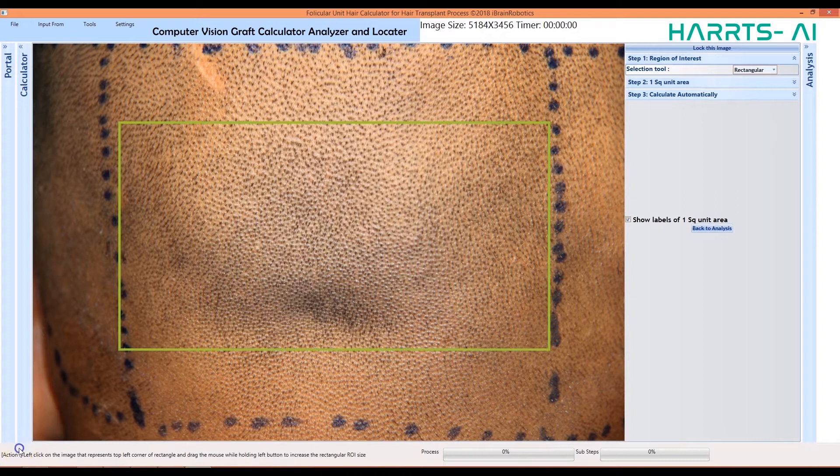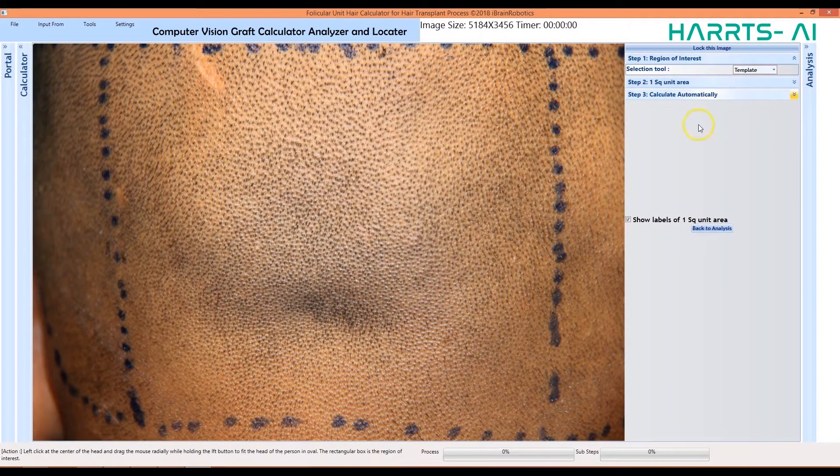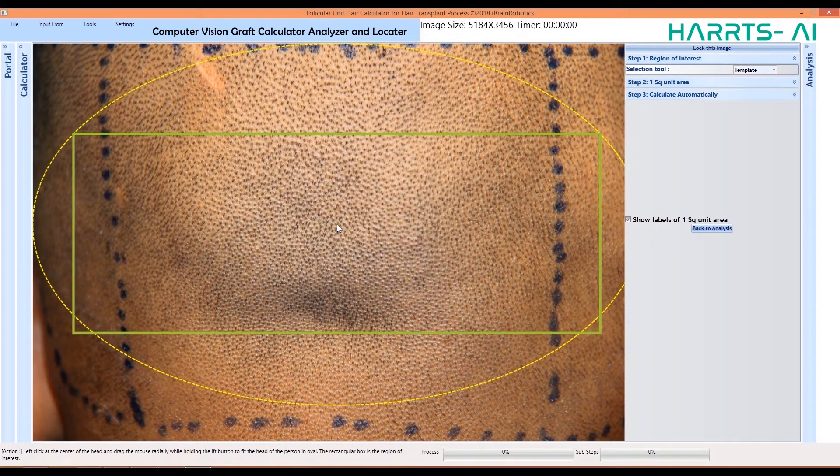For using the template tool, simply click in the center of the area of interest, and the tool will auto-select the area of interest. You can also readjust this manually if you wish.